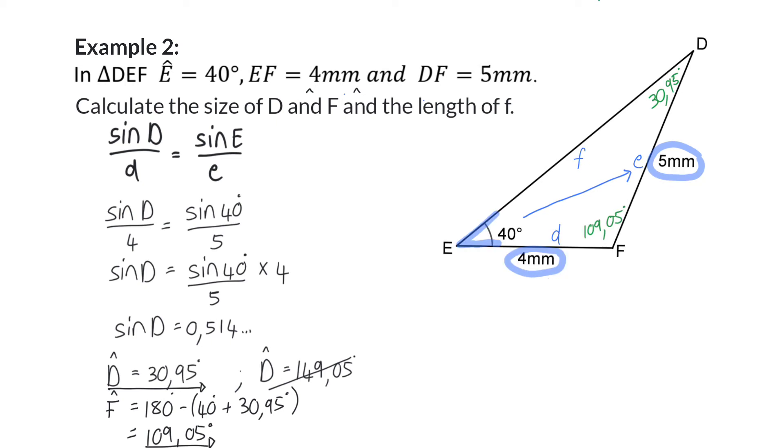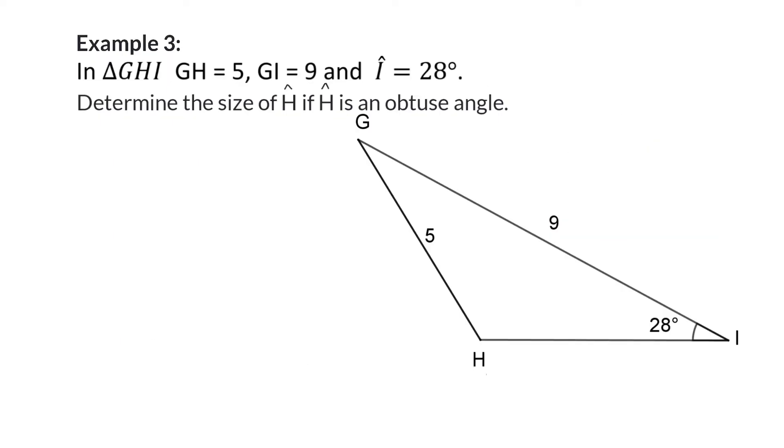Lastly, we need to determine the length of side f, so we're going to use pair F in our sine rule along with our original pair E. And once again, as I'm determining a side, I'm putting the sides at the top. After substituting, when I now solve f by multiplying on the right, f will have a size of 7.35 millimeters.